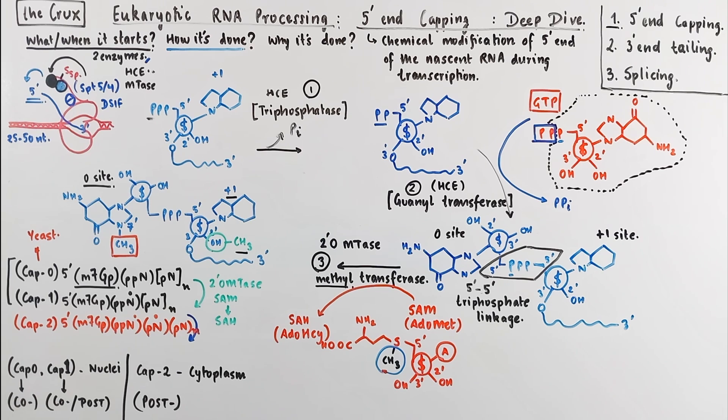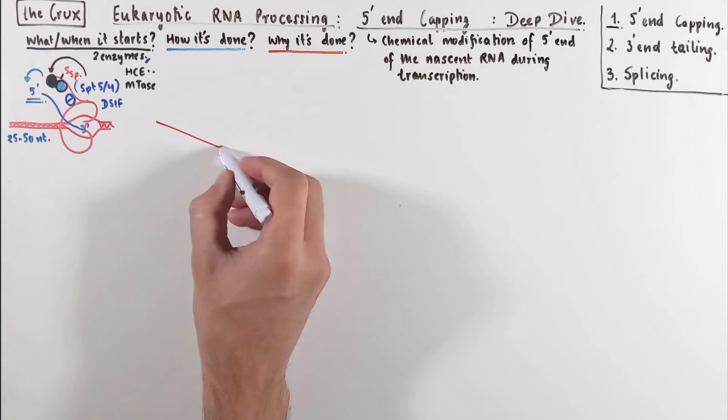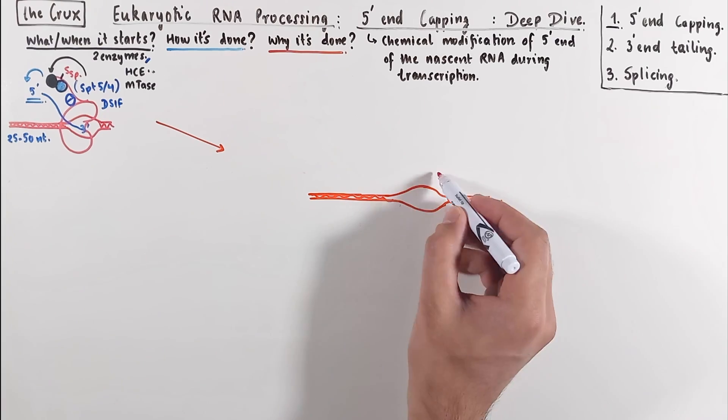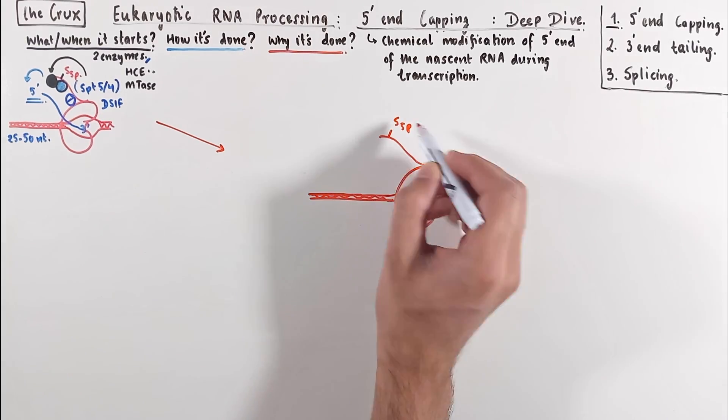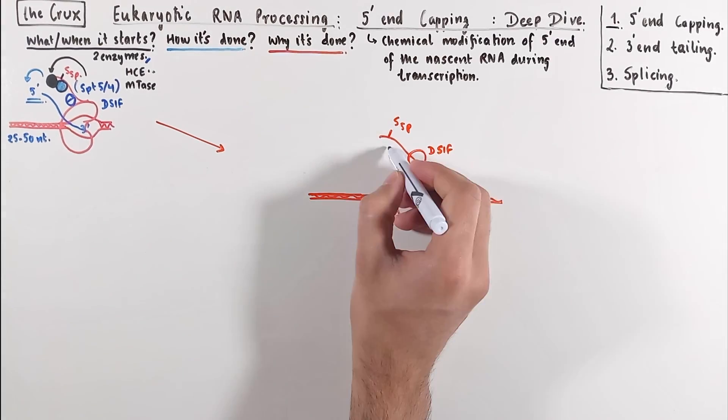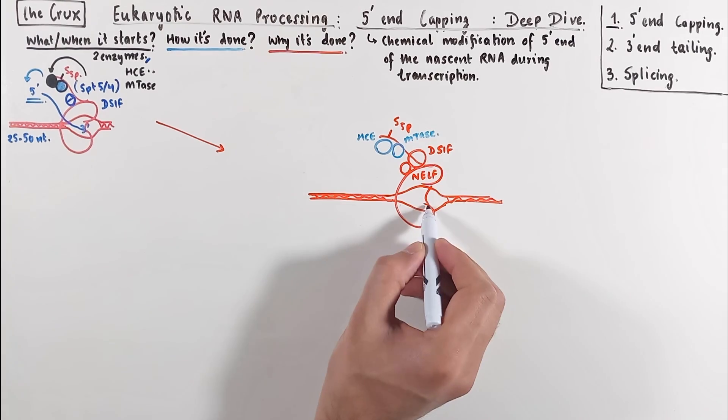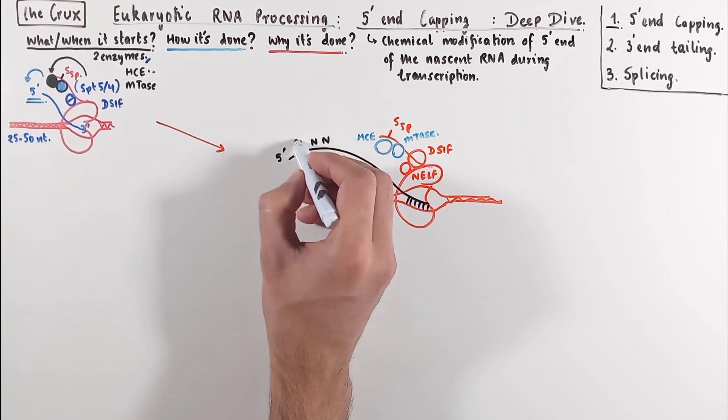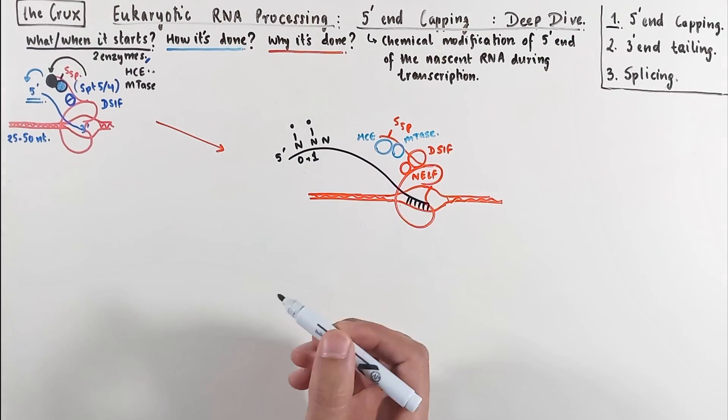Now that we understand the when, what, and how the 5' end capping is done, let's discuss why capping is important. You may already have a partial answer for this, but I'm going to give you a much more extensive explanation. Now the capping is done on this moving RNA polymerase, and since it is still in transcription, you can only have the 0 or the plus 1 site methylated.